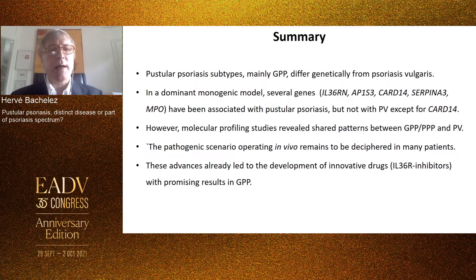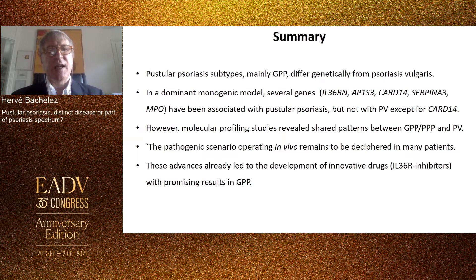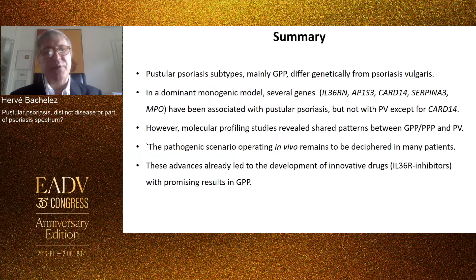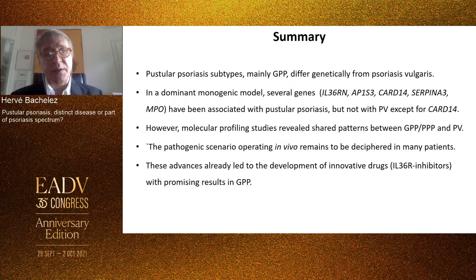To conclude, it is clear that pustular psoriasis subtypes, mainly GPP, differ genetically from psoriasis vulgaris — one is monogenic, the other is complex multigenetic — but there is some degree of intersection for the CARD14-associated form. Several genes have been associated with pustular psoriasis but not with psoriasis vulgaris except for CARD14. However, molecular profiling studies revealed shared patterns between GPP and PPP on one hand, and psoriasis vulgaris on the other. The pathogenic scenario operating in vivo remains to be deciphered, and it may differ across subtypes. These advances have already led to the development of innovative drugs — mainly IL-36 receptor inhibitors — with very promising results in GPP. Thank you for your attention.